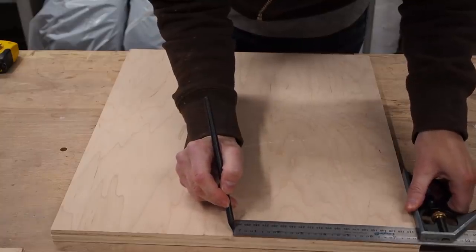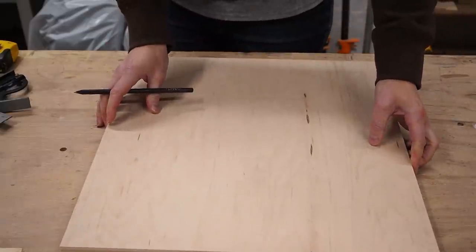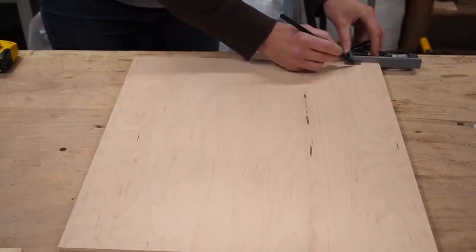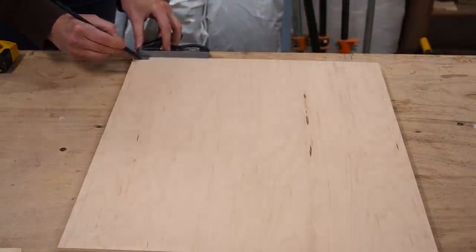I started off with a small piece of 3/4 inch plywood and marked the center on the top side. I then flipped it over to make some other markings that'll come in handy later on. More about that later.